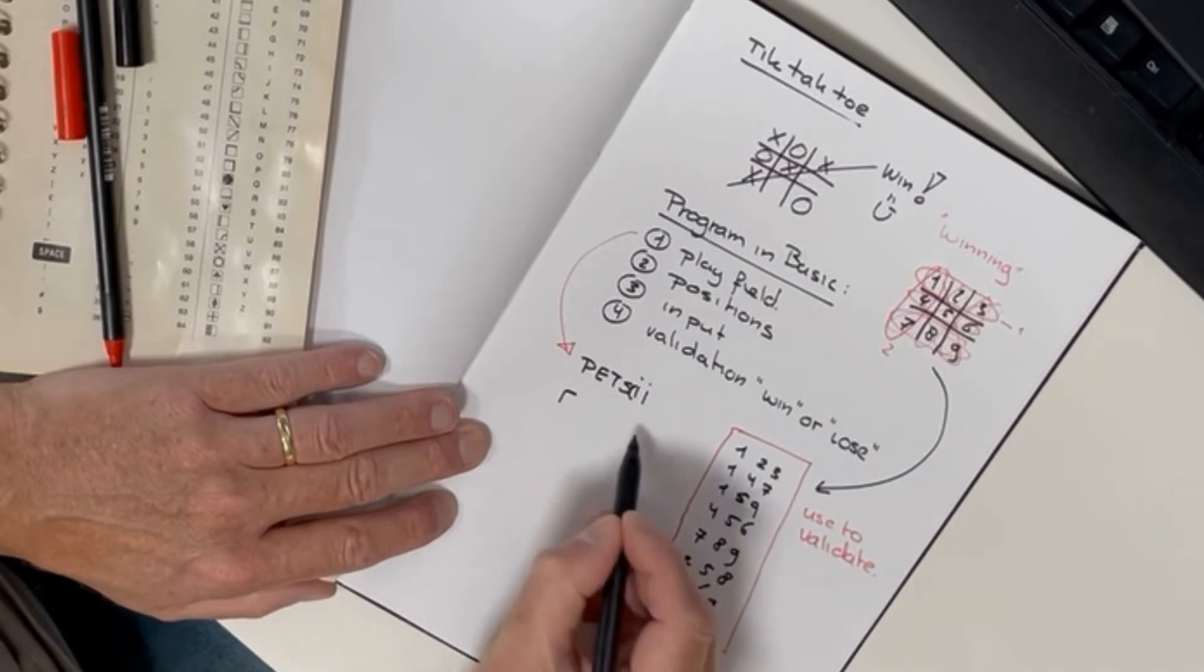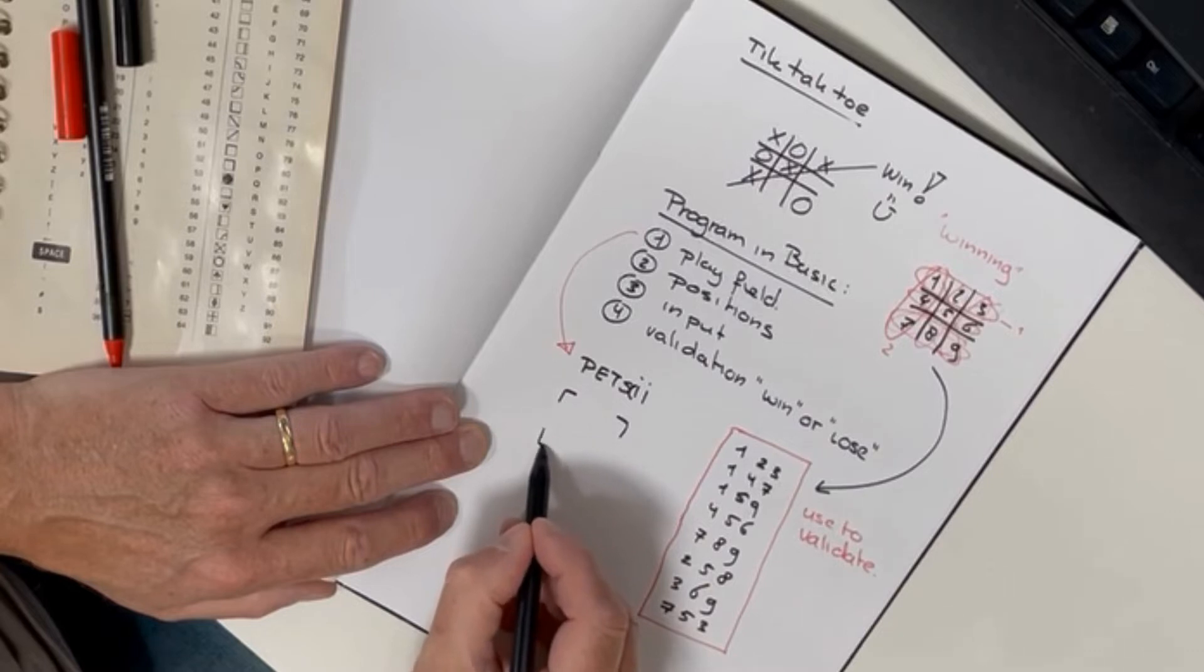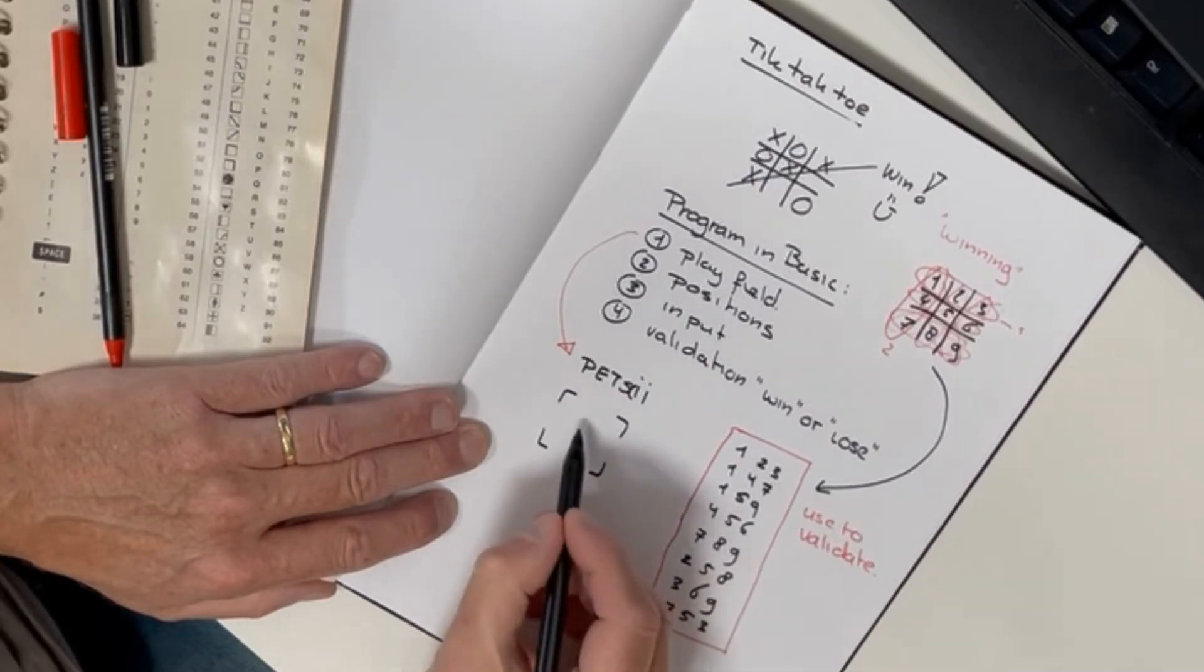For placing the playing field on the screen, I will take eight standard Petsky characters to form a matrix. The vertices and the intermediate lines will form the complete matrix.